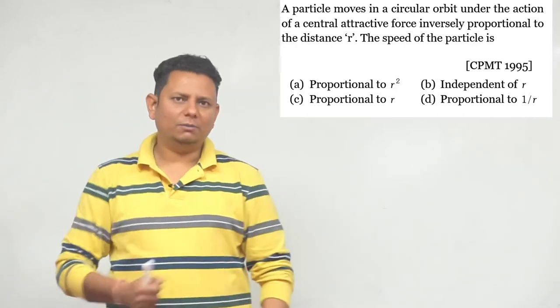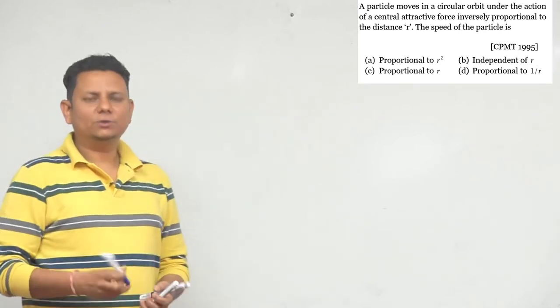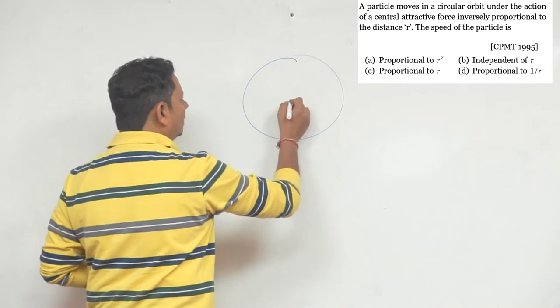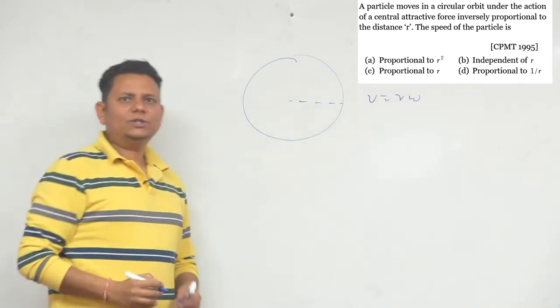Now this is an interesting situation. Usually when we talk about circular motion, we write v is equal to r omega. But here the motion is different.